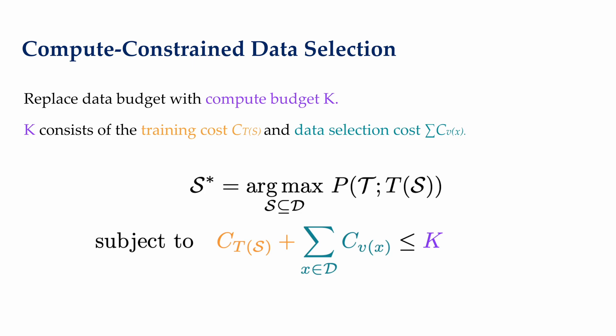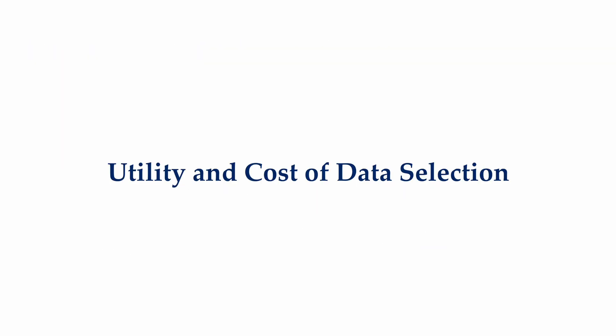Assuming we at minimal require the computation of the utility function over the entire trained data set, we can define the compute constraint data selection objective as the following. We simply replace the previous data budget K with a compute budget K, which consists of the following two cost: training cost C subscript T of S and a data selection cost C subscript V of X that is summed over the entire trained data sets. Essentially, we have the same objective, but now the constraint takes into account of all of the compute spent in both training and data selection.